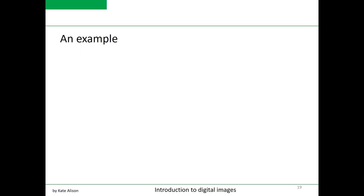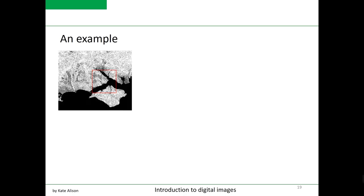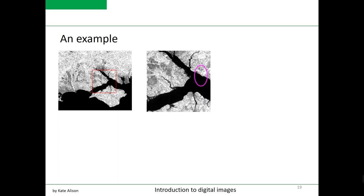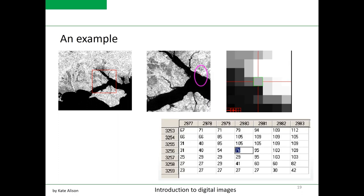In each image, we can zoom into the level of the individual pixel and retrieve its value. In this example, we are zooming into the pixel located in column 3256 and row 2980 with a digital number value or pixel value of 76.